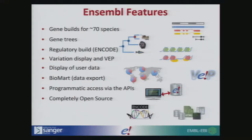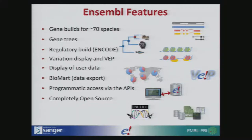Ensembl is a genome browser like UCSC, and we have lots and lots of features. We have gene builds for about 70 species — for human and mouse these are the GENCODE gene sets. We have gene trees where every single gene is compared pairwise to every other gene, and we infer orthologs and paralogs from these trees. We have a regulatory build, which is the focus of today's workshop, incorporating data from ENCODE and other sources. We have variation displays, a tool called the VEP, the ability to display your own data, and a tool called BioMart for data export.